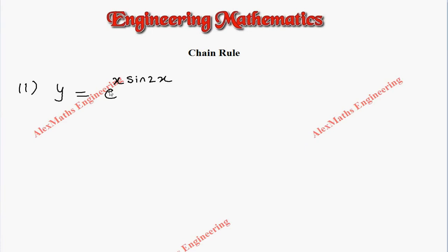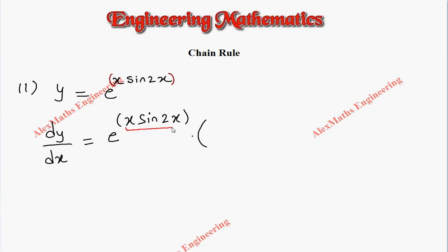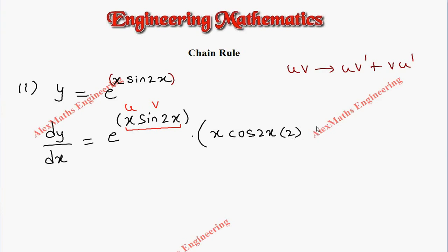Next: y = e^(x·sin 2x). Here the outer function is e and the inner function is the product x·sin 2x. The differentiation of e^x is e^x, so we write e^(x·sin 2x), then multiply by the differentiation of the inner function. Since it is a product, we apply the product rule uv' + vu': u = x, v = sin 2x, so the derivative is x·cos(2x)·2 + sin(2x)·1.